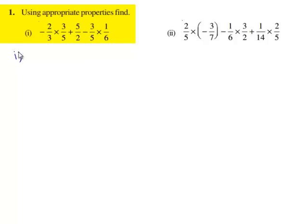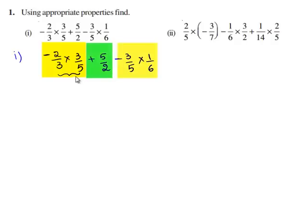let us write down the given problem. It is minus 2 by 3 times 3 by 5 plus 5 by 2 minus 3 by 5 times 1 by 6. We observe that the given problem contains three terms. This is the first term, second term and the third term. We also observe that the first and the third term contain a common factor.